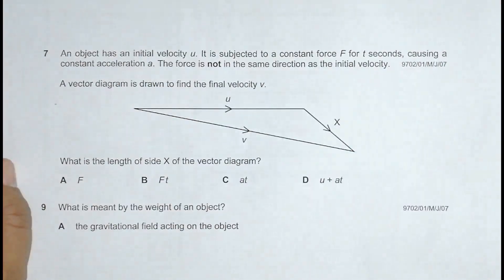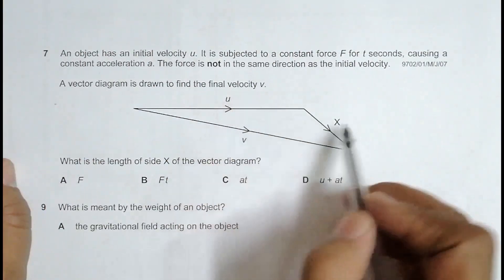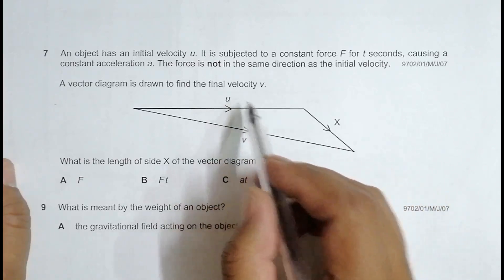So, according to this vector, what we have is the vector resultant of U and X. U and X forms V. According to this diagram, the vector resultant of U and X forms V.